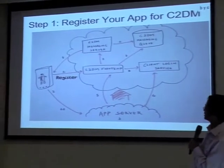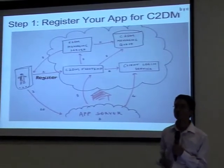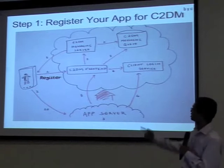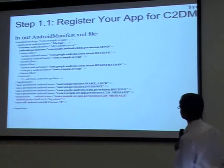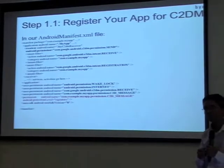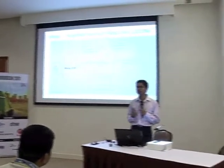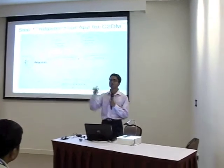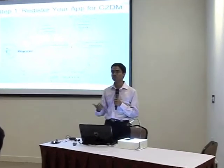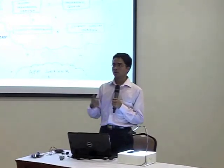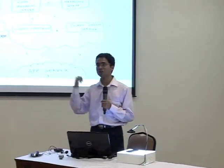Step 1: your device needs to be registered for receiving notifications. This is done from your application — the device sends a registration request to the C2DM frontend. One whitelisted email address can send 2 million notifications in one day. There is also a per-device limitation, though that is not given quite clearly.